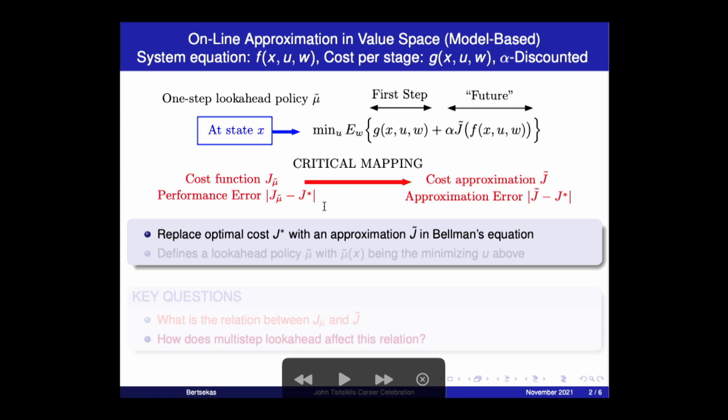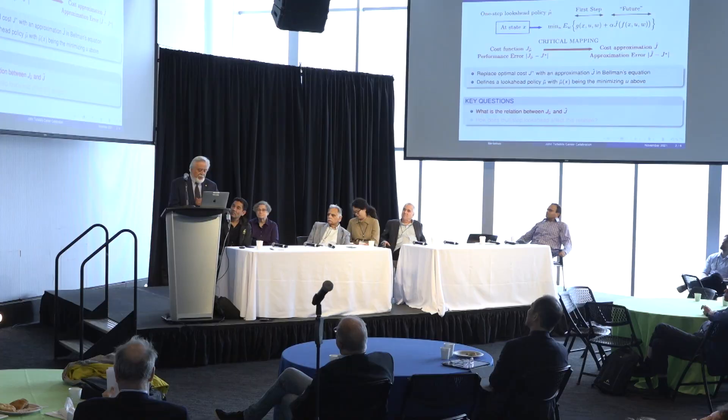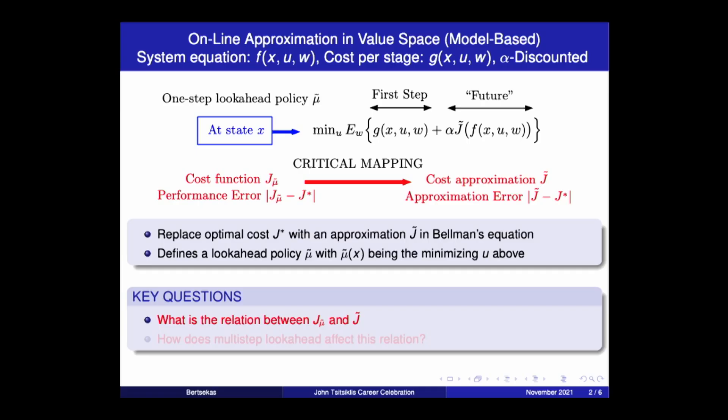And so we have this one-step look-ahead policy. There may be multi-step look-ahead, which I'm not going to give because it's too long. My key question is what's the relation between J mu tilde, the performance function, and cost approximation? And also, if this multi-step look-ahead, how does it affect this relation?